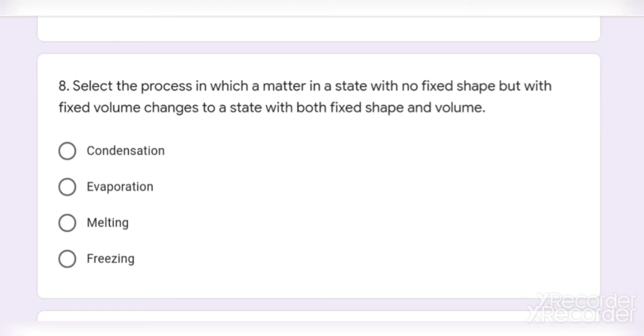Question number 8. Select the process in which a matter in a state with no fixed shape but with fixed volume changes to a state with both fixed shape and volume. Option 1: Condensation. Option 2: Evaporation. Option 3: Melting. Option 4: Freezing. And the correct answer is Option 4, Freezing.